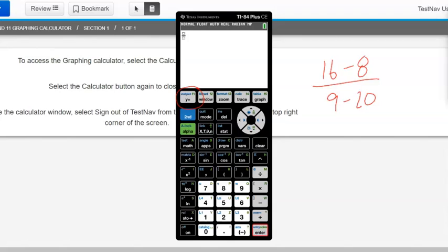And then we just type in our fraction. So we want 16 minus 8 at the top. Then we want to go down to the bottom. So we're going to click our down arrow right here. You can see it highlighted in red on your screen. And then we type in the bottom, which is 9 minus 20. Press enter.